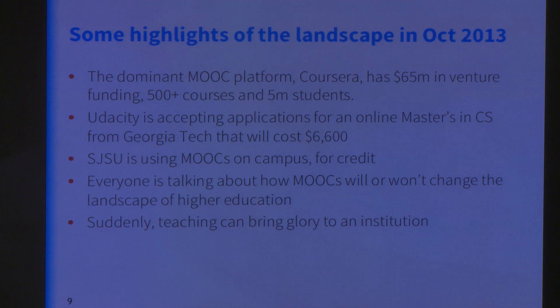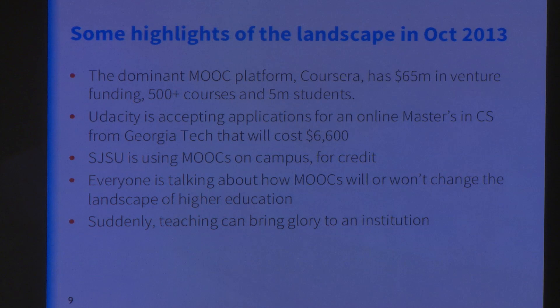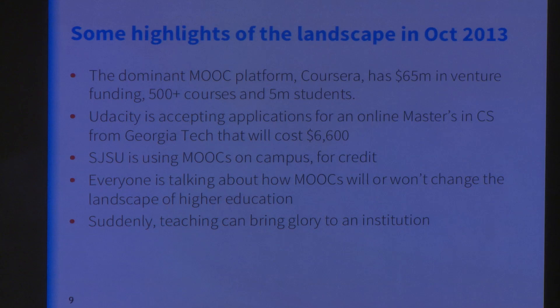Coursera is by far the dominant MOOC platform — I had to update these numbers based on Coursera's announcement today. It has $65 million in venture funding, 500-plus courses, and over 5 million students. Udacity, another MOOC platform and also a Stanford spinoff, is accepting applications for an online master's in computer science from Georgia Tech — a top 10 computer science department — that will cost $6,600, which is potentially game-changing. San Jose State is using MOOCs on campus for credit, and everyone's talking about how MOOCs will or maybe won't change the landscape of higher education.